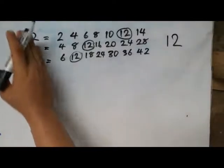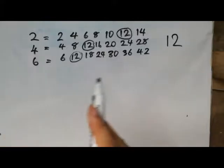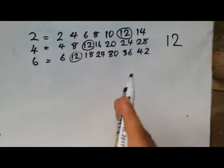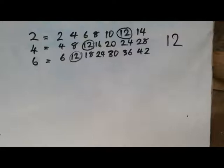That is the first method of getting the LCM — called the listing multiples method. All you need to do is keep listing out the multiples and find the least common one. This method is challenging when the numbers are far apart, for example 1, 13, 17, and 35, because it will take a very long multiplication before you find the least common multiple. That is the disadvantage of this method.